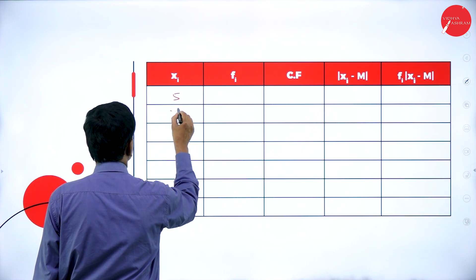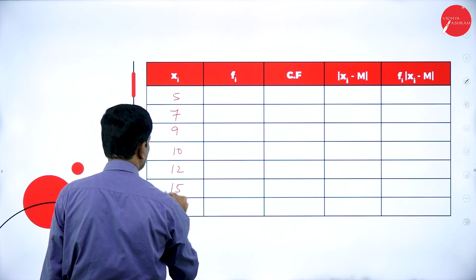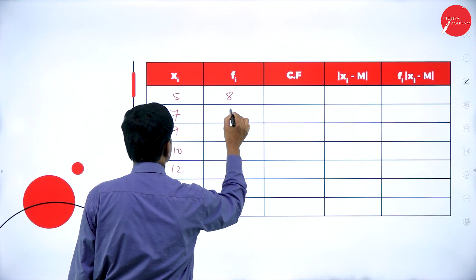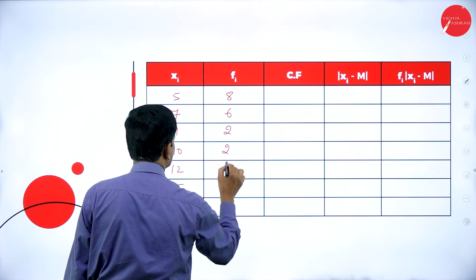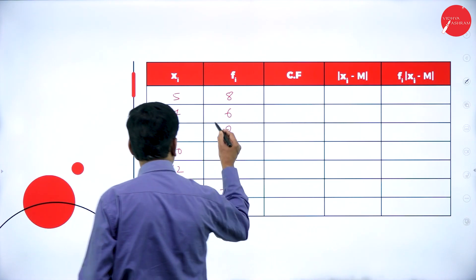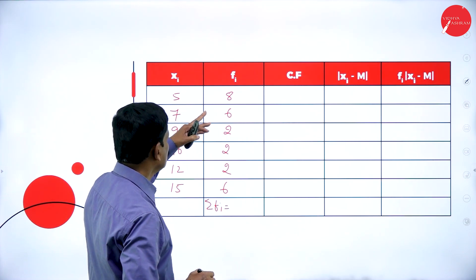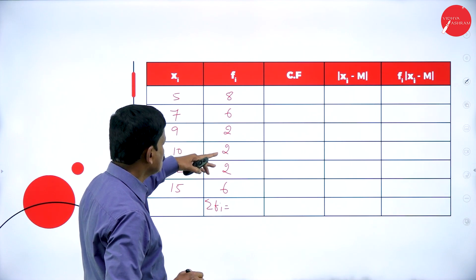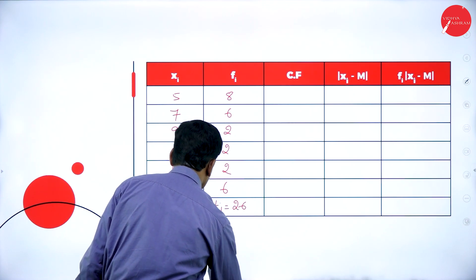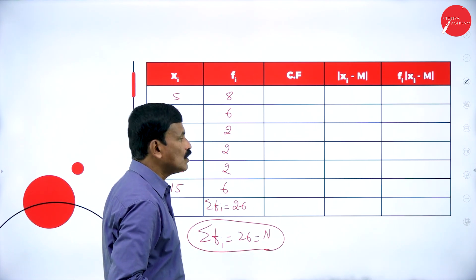Xi values: 5, 7, 9, 10, 12, and 15. Fi values: 8, 6, 2, 2, 2, and 6. Now find n. n is nothing but sigma fi. If you add: 8 plus 6 is 16, plus 4 is 20, plus 6 is 26. So sigma fi is equal to 26, which means n is equal to 26.